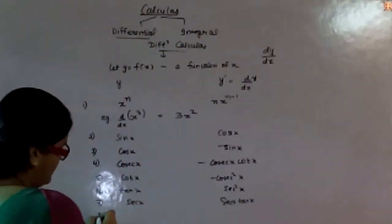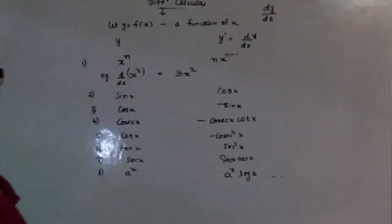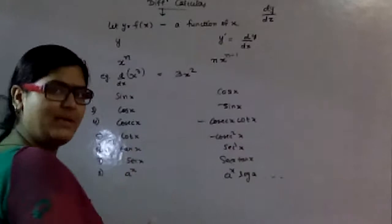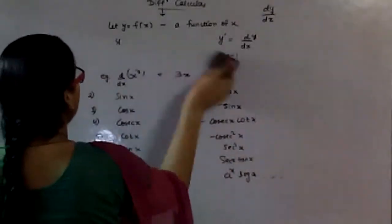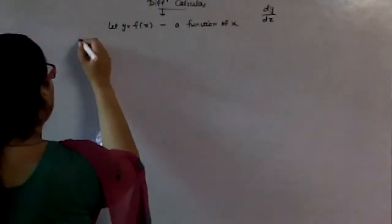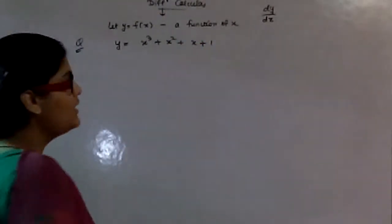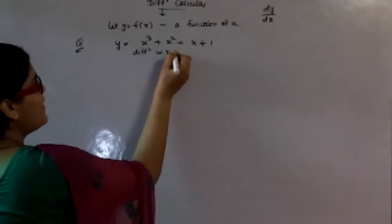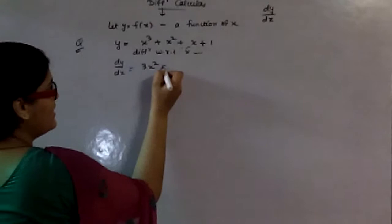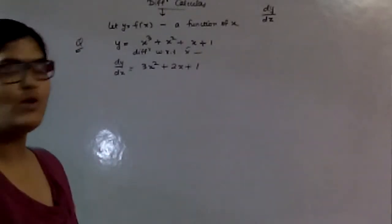Now let us work with some examples and rules. We are going to discuss the product rule. Let us take an example — if we have to differentiate a polynomial function with respect to x, then dy/dx gives us 3x squared for the cubic term, 2x for the quadratic term, 1 for the linear term, and the differentiation of any constant number is 0.